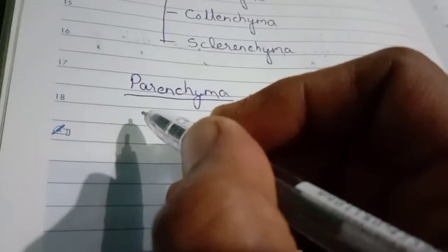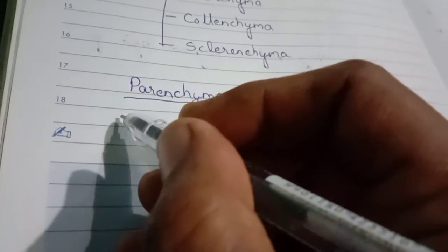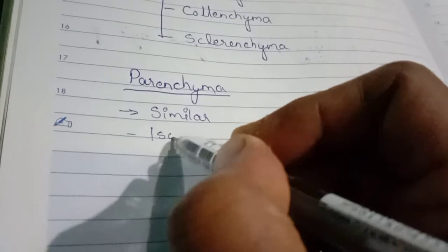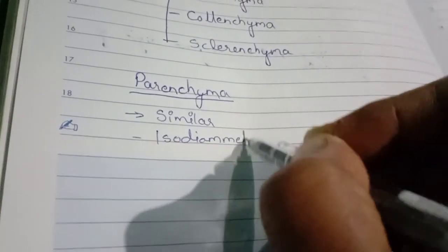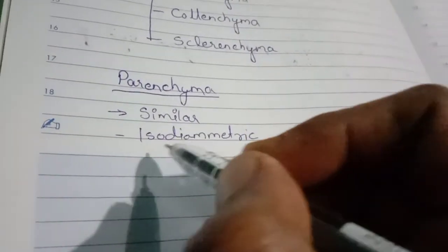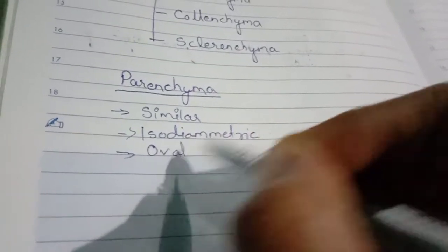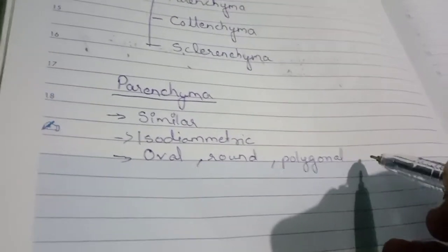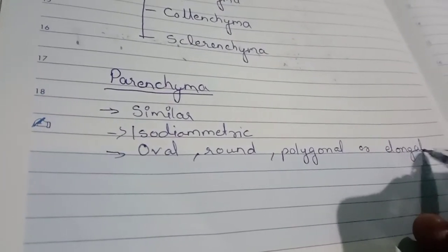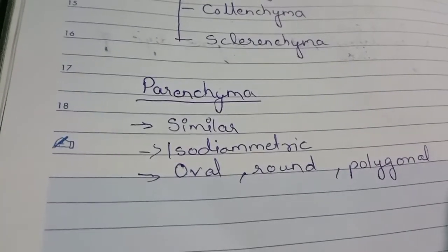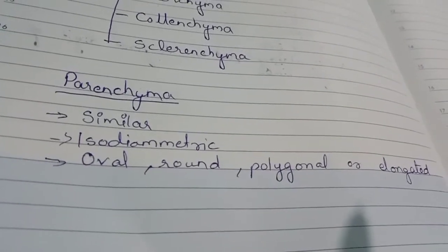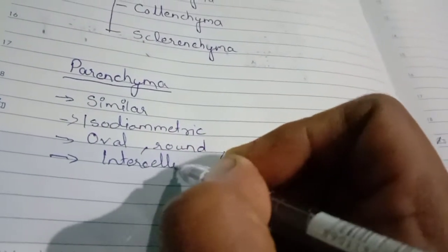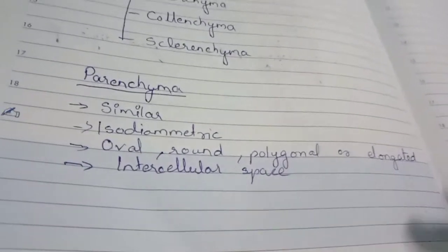Parenchyma forms the major portion of the plant body. The cells are of similar structure, specially isodiametric — meaning they have the same diameter and same size. They can be oval, round, polygonal, or elongated. Importantly, they have intercellular space present in between the cells.